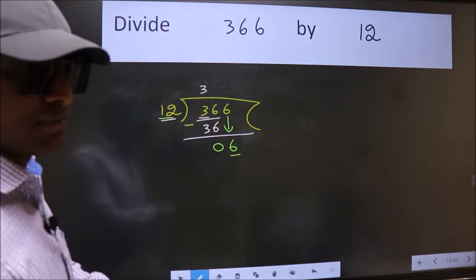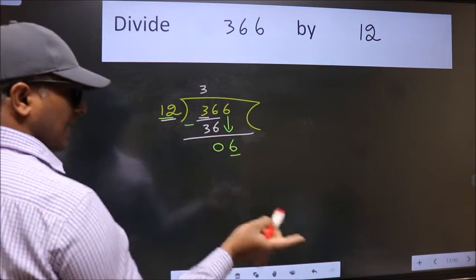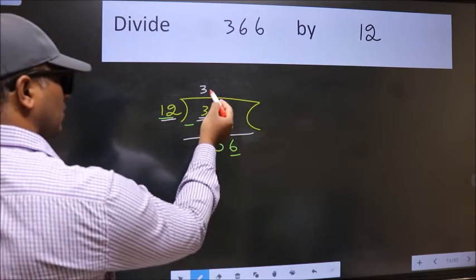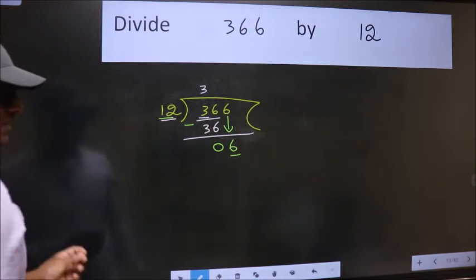So what many do is they directly put dot, take 0, which is wrong. Why is it wrong? Because just now you brought this number down, and in the same step you want to put dot, take 0, which is wrong.